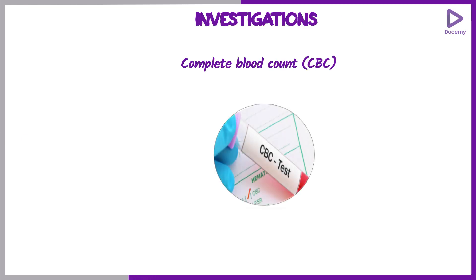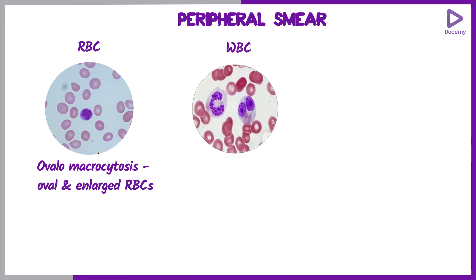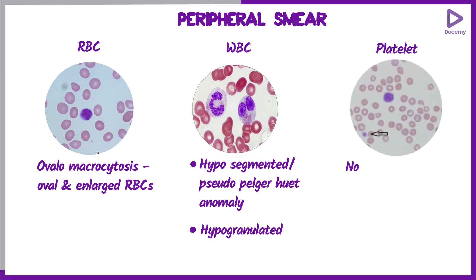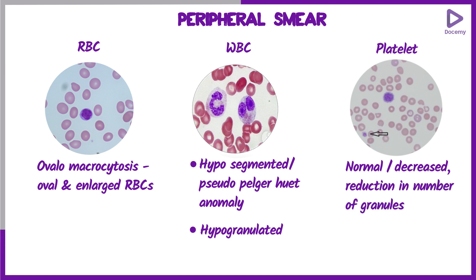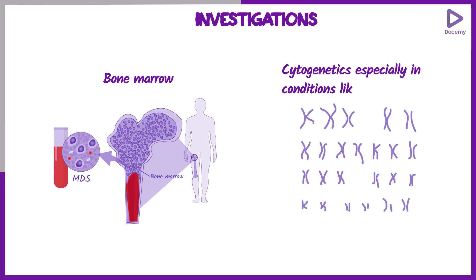For investigations, just like other hematological disorders, you start with a complete blood count. On peripheral smear, you will see oval macrocytosis — oval and enlarged RBCs. WBCs will be hyposegmented and hypogranulated; these hyposegmented WBCs are called pseudo-Pelger-Huët anomaly. Platelet count can be normal or decreased and may show a reduction in granules. The next investigation is bone marrow biopsy, and if necessary, cytogenetics — especially in conditions like 5q deletion.